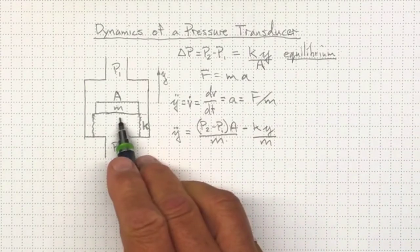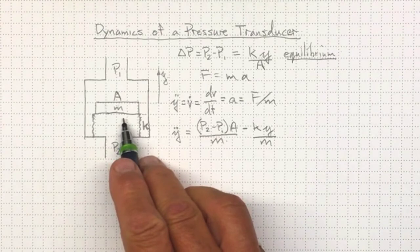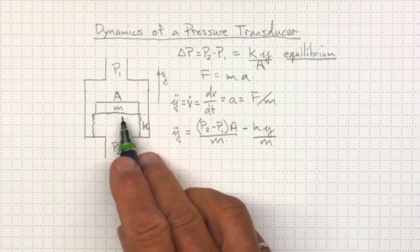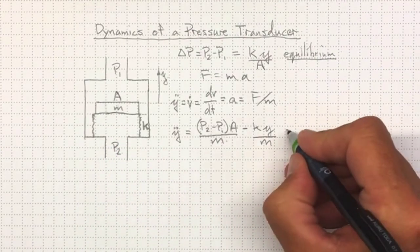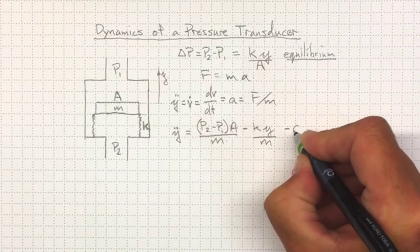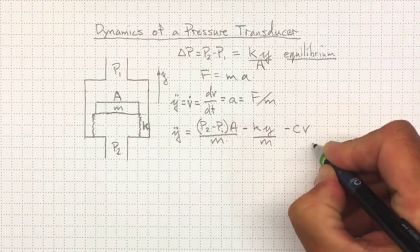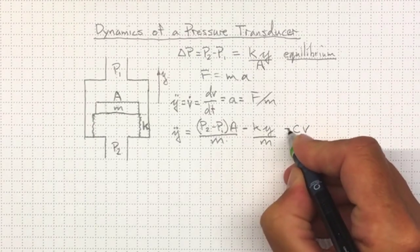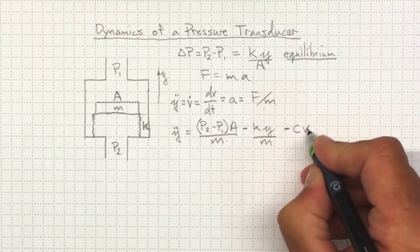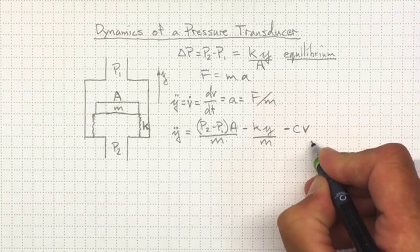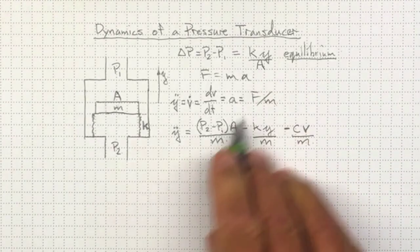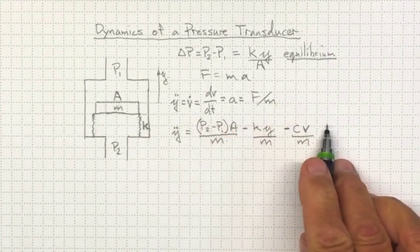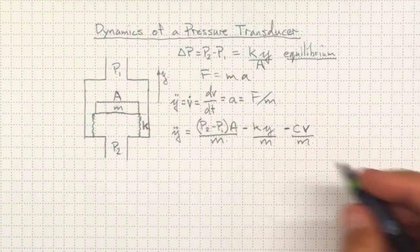And then we don't have a device in here to show it, but there's always friction. If there's motion, there's going to be some friction that tends to oppose that motion. So there's going to be a force against the direction of motion. So there will be some damping force, C, times the vertical velocity, V, and it will have a negative sign on it because friction goes in the opposite direction of the motion. And again, that one's got to be divided by M because we're looking at forces divided by mass.